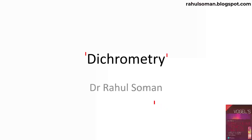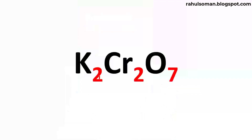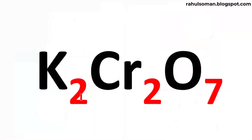Redox titrations or redox reactions involving potassium dichromate are synonymously known as dichromatry. Here we are using potassium dichromate K2Cr2O7 as an oxidizing agent. We have already gone through various oxidation-reduction titrations using oxidizing agents as standard material — permanganometry, cerimetry, iodometry, iodimetry — and now we have reached dichromatry, where we are using K2Cr2O7 as a primary standard and oxidizing agent.